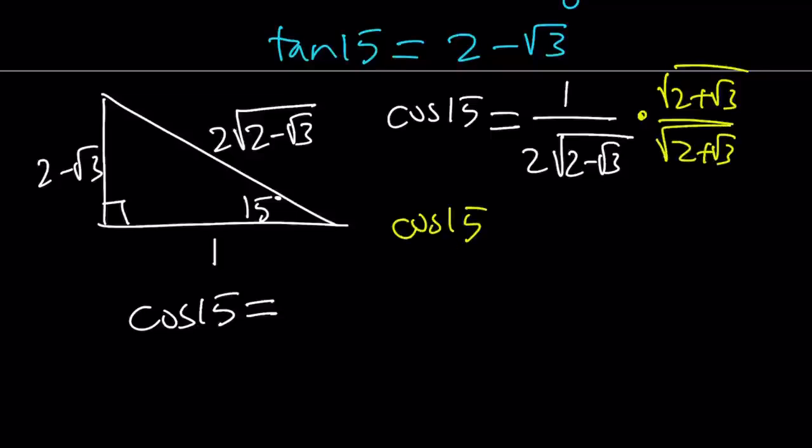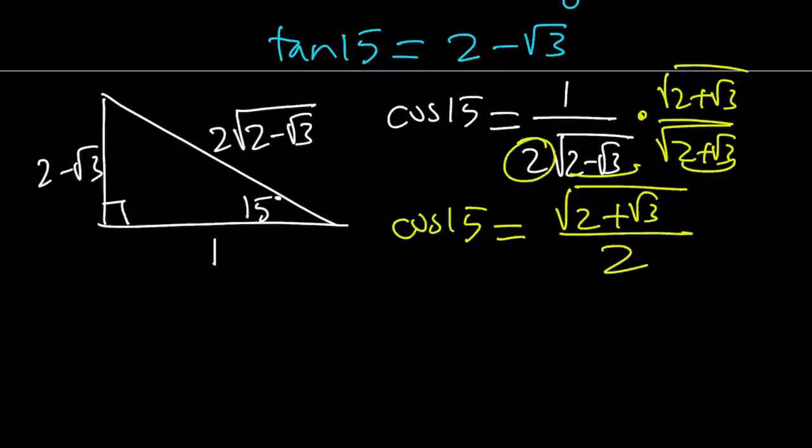Cosine 15 from here becomes square root of 2 plus root 3. And at the bottom, these two make 1, so we're going to end up with a 2. That is cosine 15. Now, how am I going to use that, right, to evaluate our expression? Remember, our original expression was the square root of 2 plus root 3, and obviously, we're pretty close to that, right?